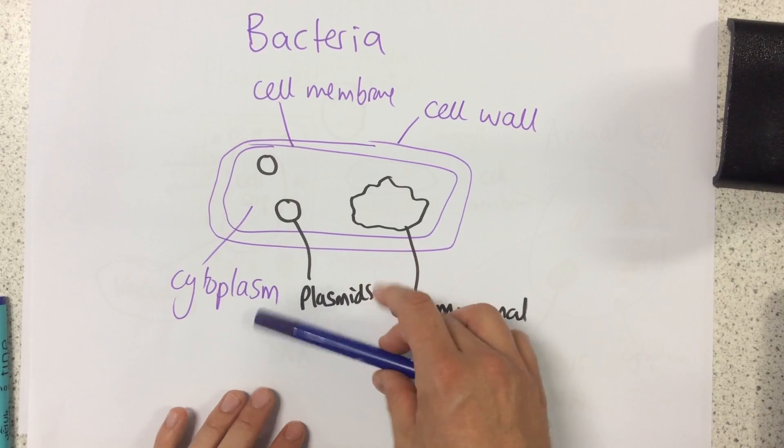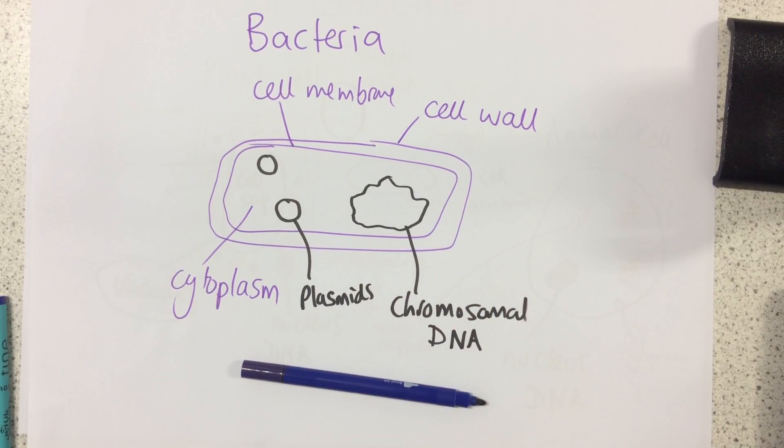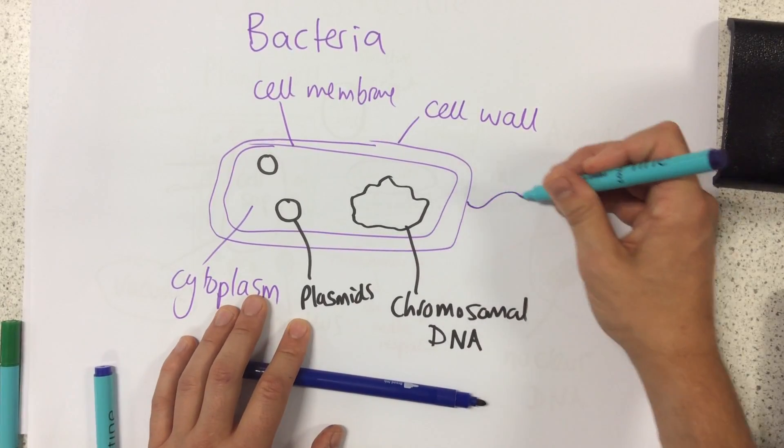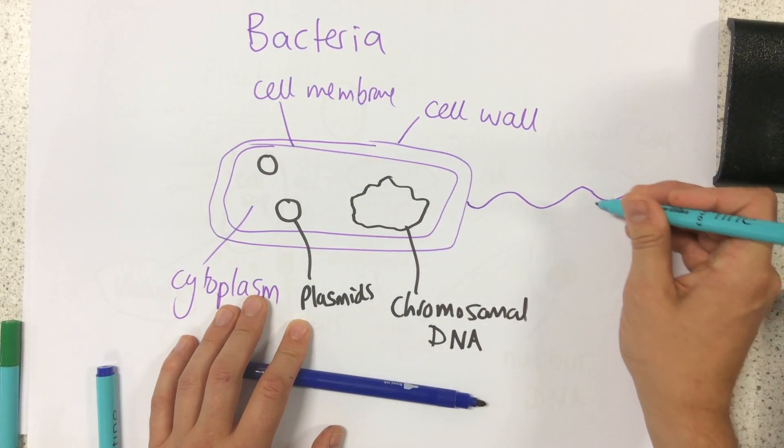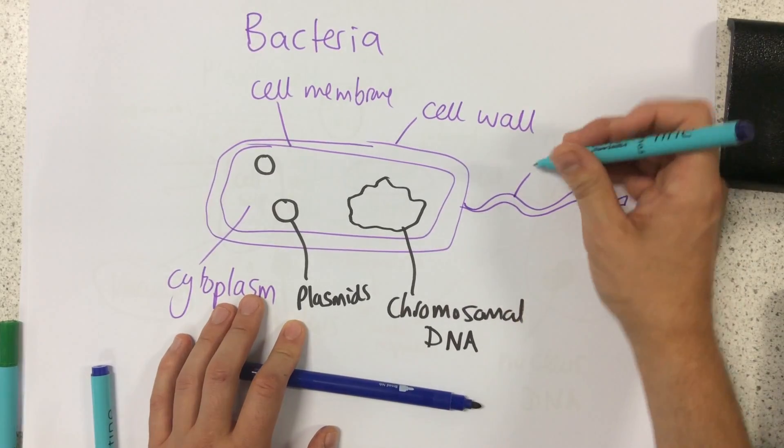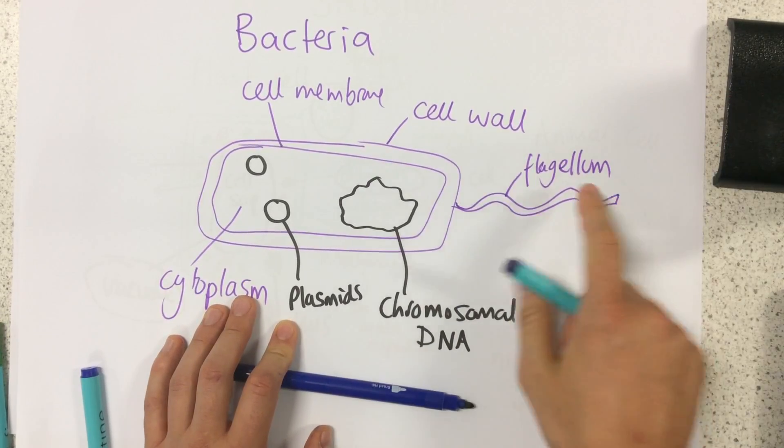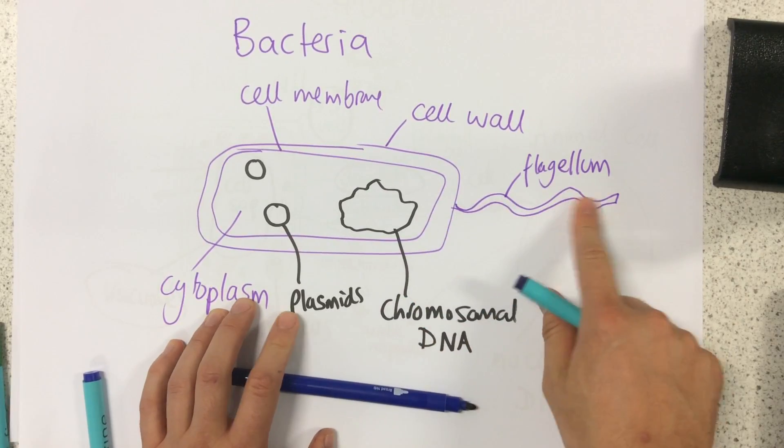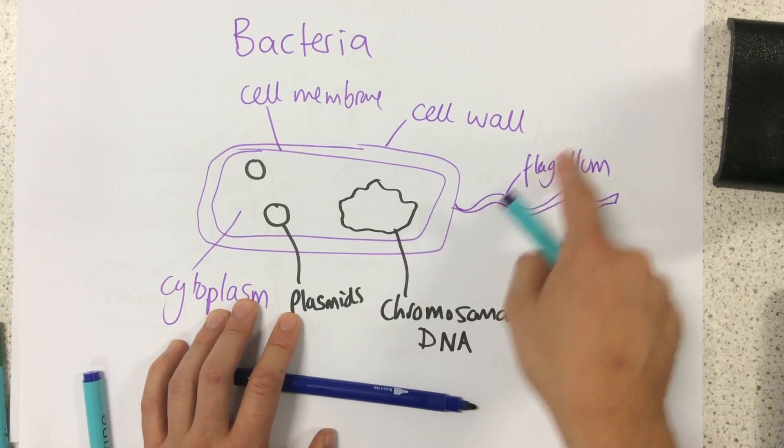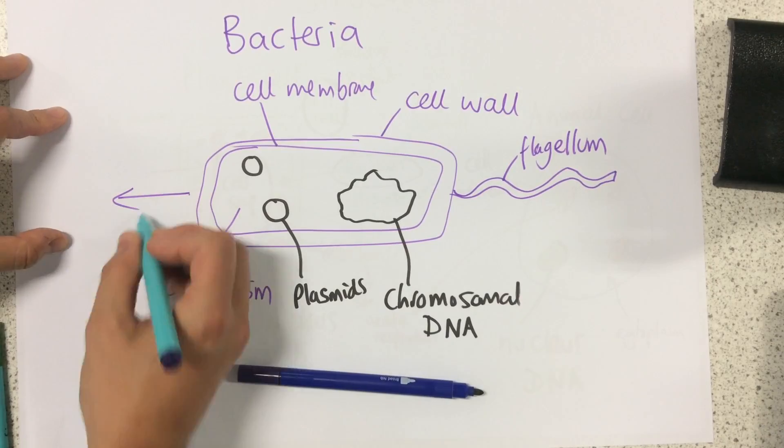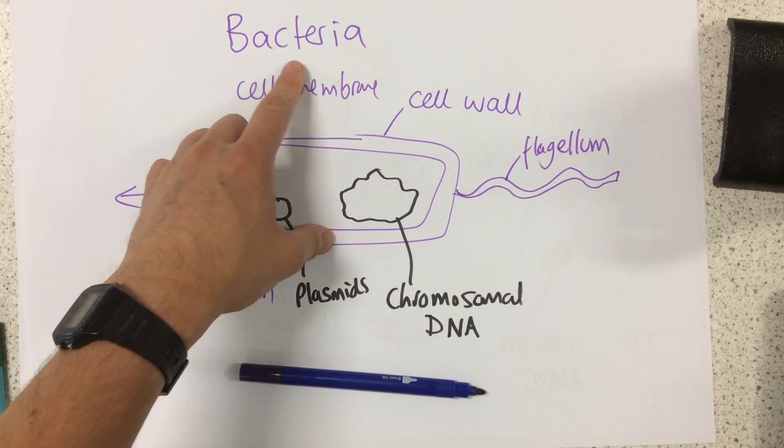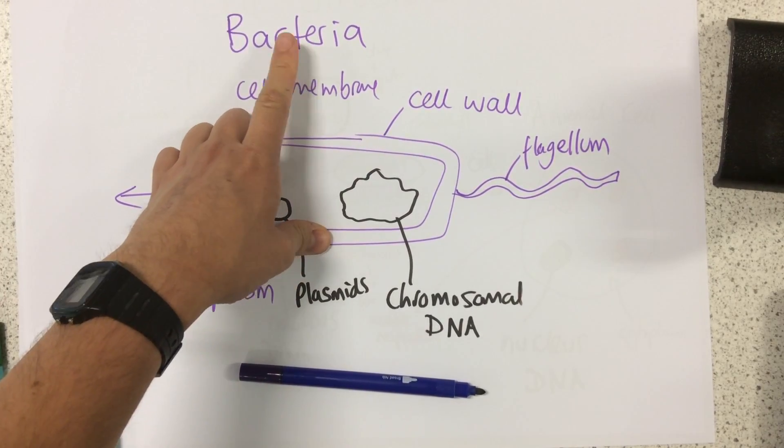So the last thing that we need to know about is this strange structure that comes off a bacterium called a flagellum. Now all this flagellum is, it's like a little bit like a tail. It just spins around and allows that bacteria to move because remember a bacteria is a single cell organism.